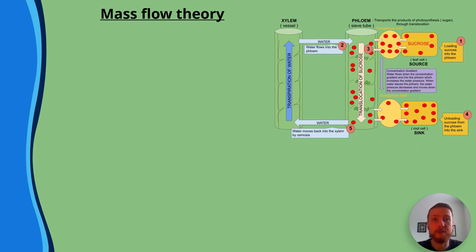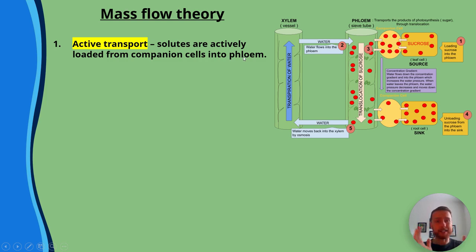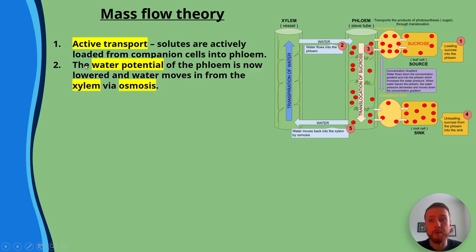Looking at mass flow theory: active transport is where solutes are actively loaded from companion cells into the phloem. This condenses the entire process we looked at before. It does use energy because the hydrogen ions required active transport, so overall this is an active process to get sucrose from the companion cell into the phloem.